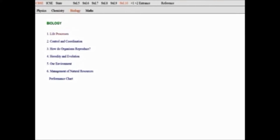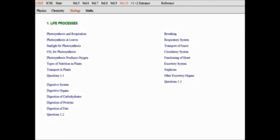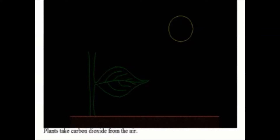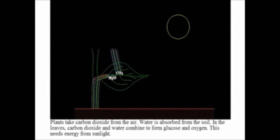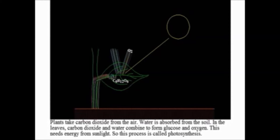Life processes: photosynthesis and respiration. Plants take carbon dioxide from the air. Water is absorbed from the soil. Leaves capture the energy of sunlight using chlorophyll molecules. The leaves make glucose and release oxygen to the air. This process is called photosynthesis.